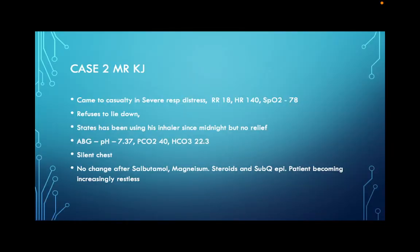New case: Mr. KJ came to casualty in severe respiratory distress - respiratory rate 18, heart rate 140, sats 78%. He refuses to lie down, sitting up leaning forward. He's been using his inhaler since midnight with no relief. Blood gas shows pH 7.37, CO2 40, bicarb 22.3. You listen to his chest and hear nothing. He's 18 years old. Severe asthma.